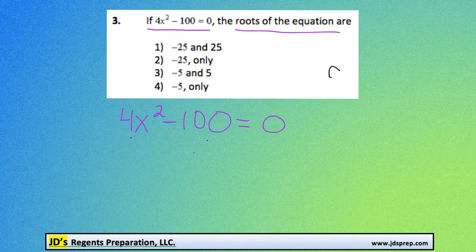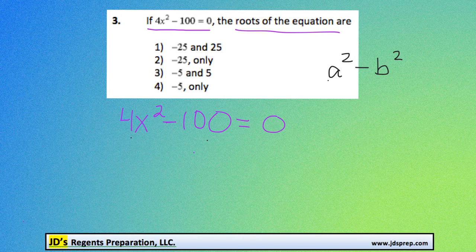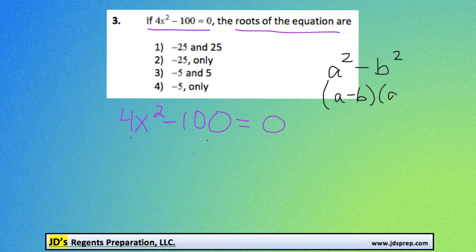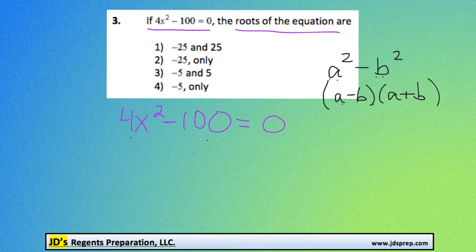As a quick refresher on how to deal with a difference of squares: let's say you had a squared minus b squared. The factored form of that would be a minus b times a plus b. So a and b are the square roots of these two terms.